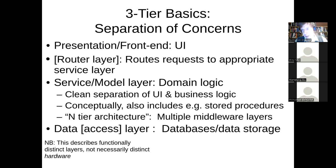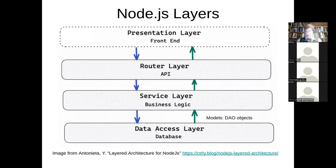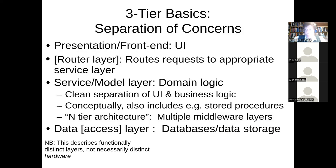N-tier architecture — where N is a variable indicating more than three — is often misunderstood, as people sometimes think of it as a matter of where hardware lives. But not necessarily so. The issue is that there are logical layers of the system — like those you see for Node.js — that exhibit a separation of concerns. That separation and decomposition allows us to address scalability, concurrency, transactionality, and the other challenges mentioned. It may not be obvious why layering helps, but it does — let's talk about these layers.